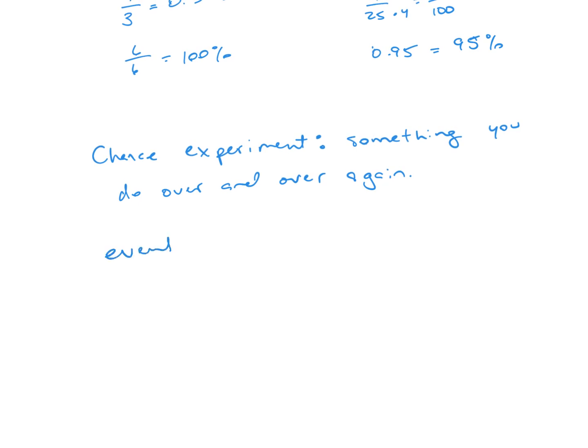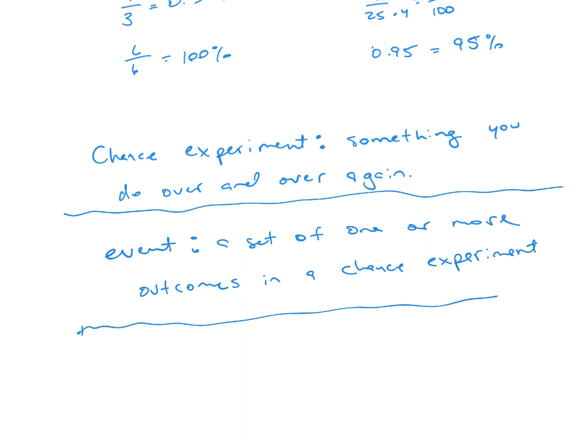An event. This is a set of one or more outcomes in a chance experiment. So, in other words, it's basically what you want to happen in your experiment. So, if I'm rolling a number cube, you can roll a 1, 2, 3, 4, 5, or 6. So, the event is what you would want to happen. So, for example, rolling a number less than 3, rolling an even number, rolling a 5. Those are all considered events.